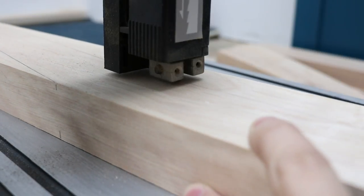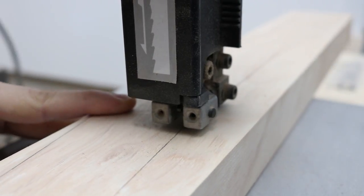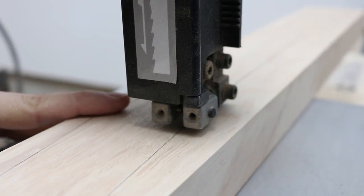For the inner curve I used the bandsaw to cut away the bulk of the material. Then I used my taper jig to cut the two outer curves on the table saw.